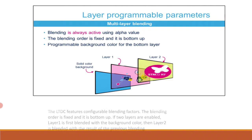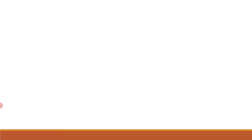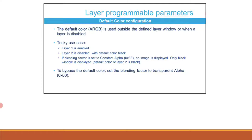Each layer can have a default color in ARGB format, which is used outside the defined layer window or when a layer is disabled. For a tricky use case: if layer 1 is enabled and layer 2 is disabled with default color black, and the blending factor is set to constant alpha equal to 0xFF, then no image is displayed — only the black window. To bypass the default color, set the blending factor to transparent, i.e., alpha equal to 0x00.